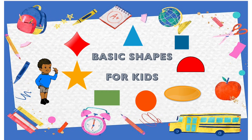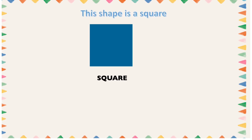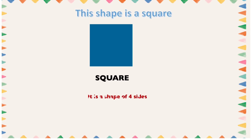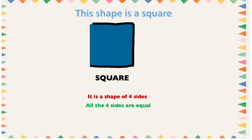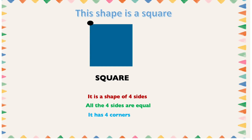In this video we are going to learn about shapes — different types of shapes. Please don't forget to subscribe, like and share with friends. This shape is a square. A square has four sides with all four sides equal: one, two, three, four. It has four corners: one, two, three, four.